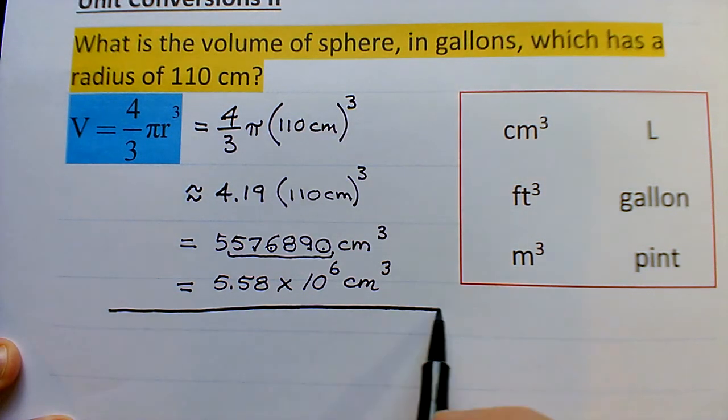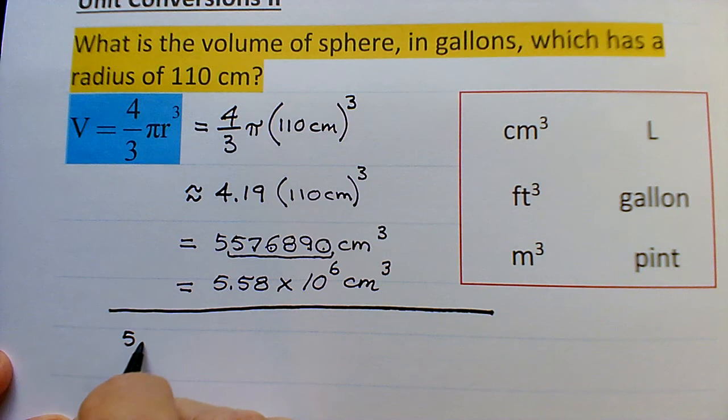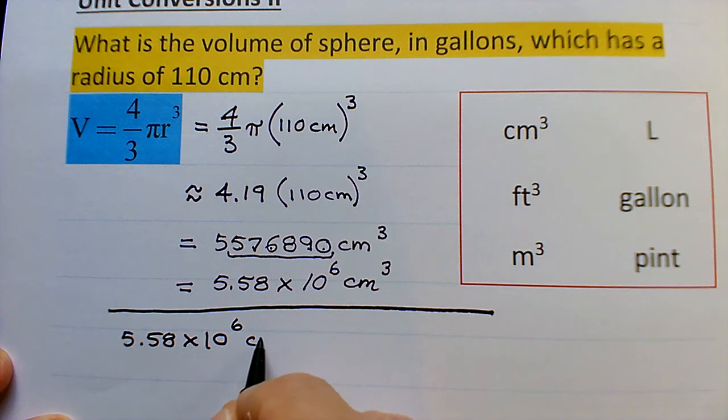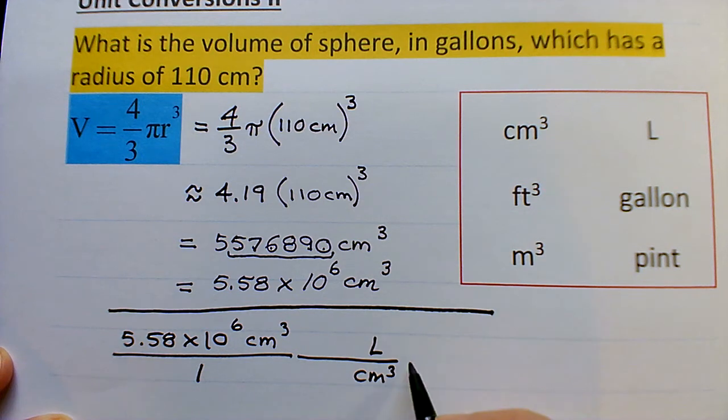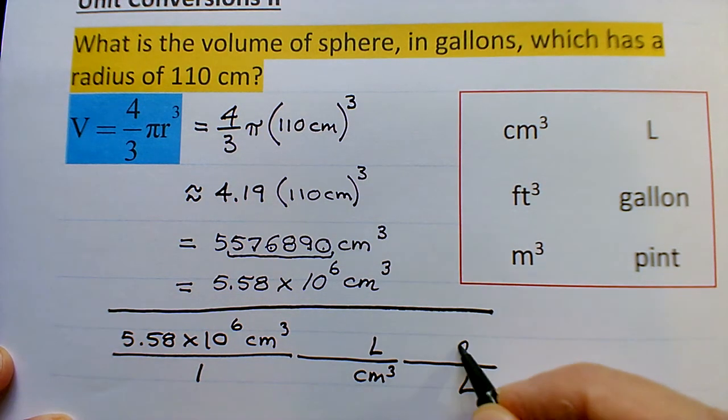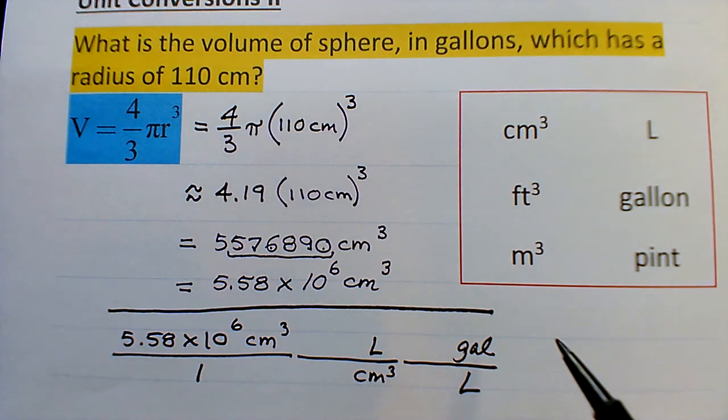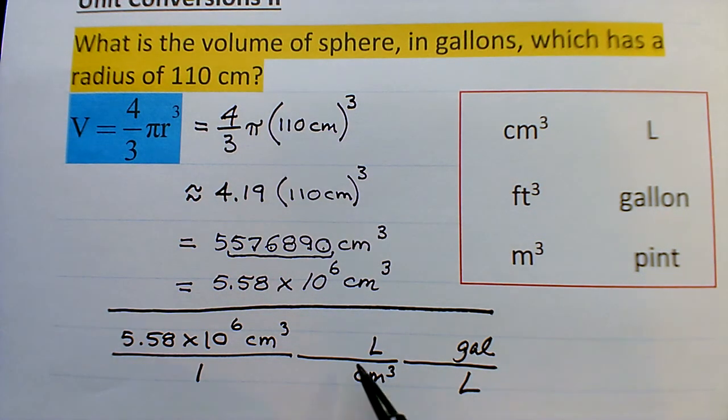And now we're going to convert to gallons. So 5.58 × 10^6 cubic centimeters over one. I'm going to go cubic centimeters to liters and liters to gallons. One of the things I left off this slide are the conversions, but of course I have them in my head. I would expect anybody doing a conversion to have a conversion sheet in front of them.